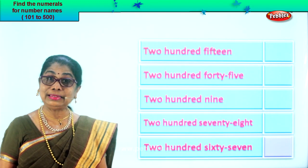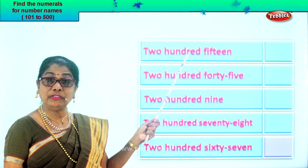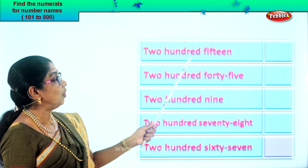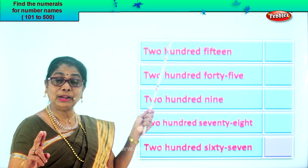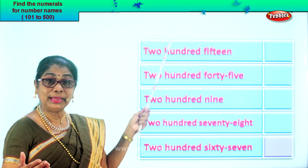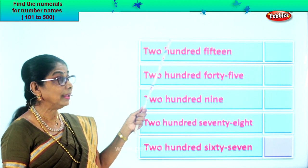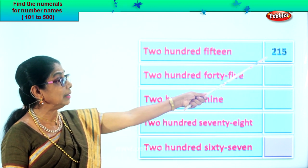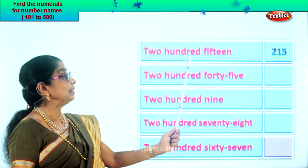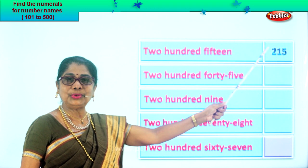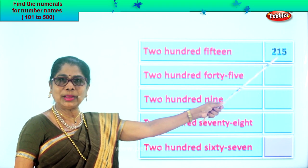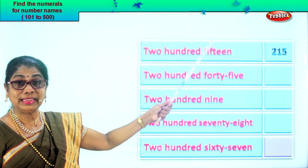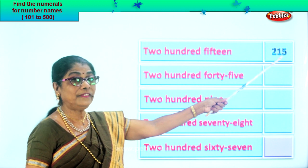Shall we take another exercise? Let's read the first one: two hundred fifteen. What is in the hundredth place? Two. Fifteen means one in the tens place, five in the ones place. When you write the numeral: two hundred fifteen. Two in the hundredth place, one in the tens place, five in the ones place. Let's read: two hundred fifteen.